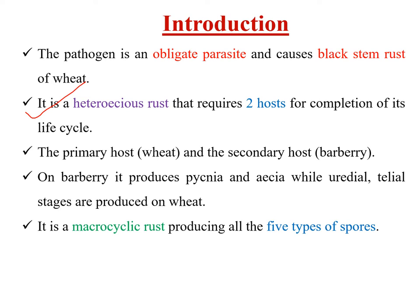One host is wheat and the second is barberry. Barberry produces pycnia and aecia, while the remaining spore stages — uredial and telial — are produced on wheat. That is why this pathogen is known as macrocyclic rust: macrocyclic means it produces all types of spores, and heteroecious means it requires two hosts to complete the life cycle.